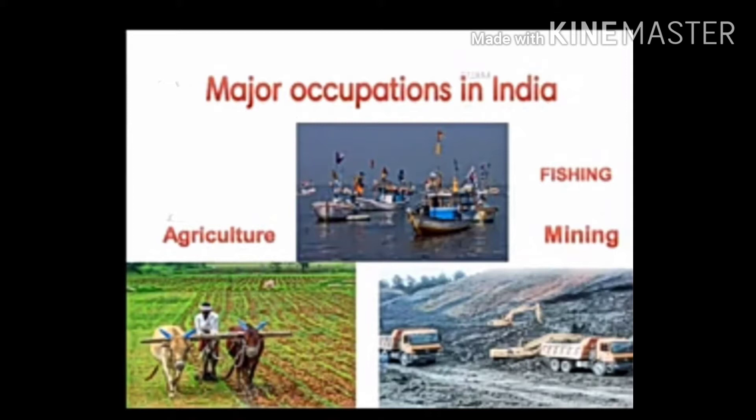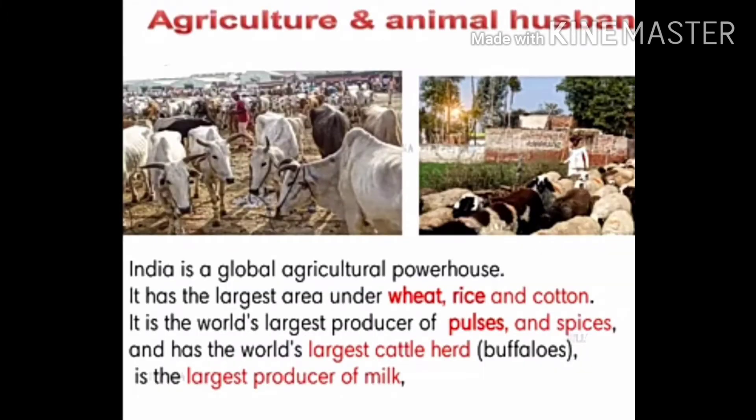We are comparing the same occupations: agriculture, mining, and fishing. Coming to agriculture and animal husbandry in India compared to Brazil — India has a large area where agriculture is practiced across the entire country, but in Brazil it was limited to the coastal areas and the highlands. Agriculture is not a major occupation in Brazil, but in India it is.